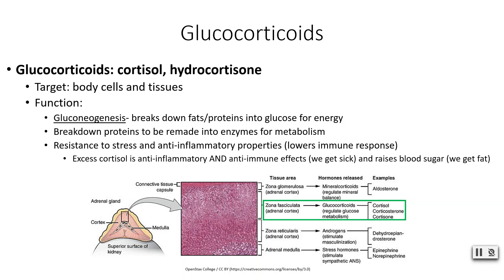There is a bad side effect: if we are reducing anti-inflammatory properties, we are technically lowering our immune response, making us more susceptible to getting sick. Too much cortisol is a bad thing. If we're doing gluconeogenesis too much, this will raise blood sugar. If we're really stressed out but not burning off that energy, that new glucose just gets stored as fat. So too much cortisol means we get sick and we get chunky.